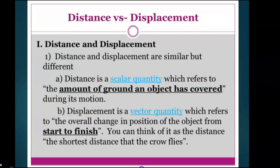Distance and displacement are similar but different. Distance is a scalar quantity which refers to the amount of ground an object has covered during its motion. Displacement is a vector quantity which refers to the overall change in position of the object from start to finish — you can think of it as the shortest distance that the crow flies.